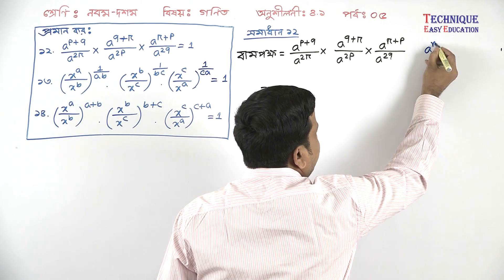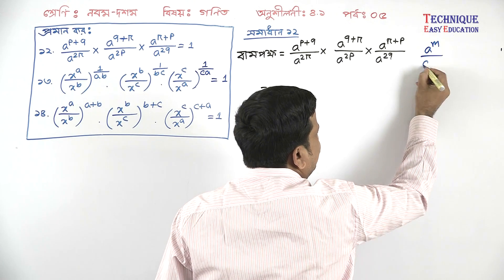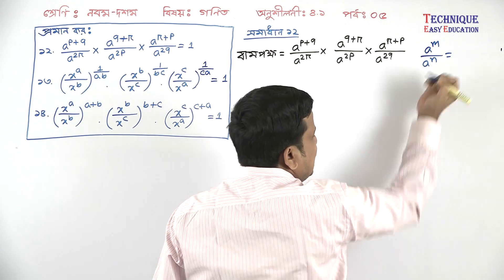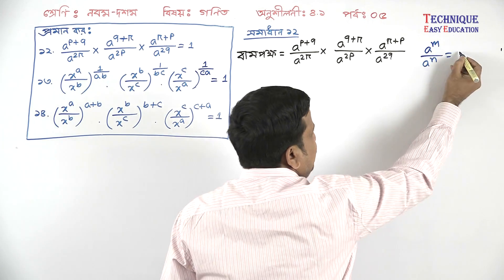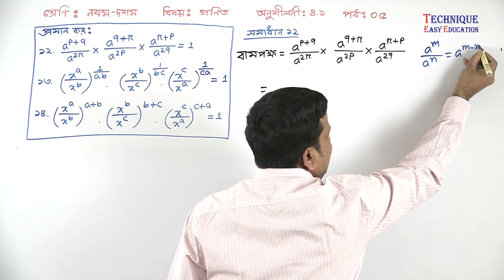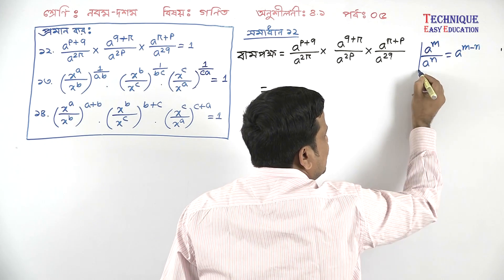Now, that means A to the power M to the power N. So, base X, then power 2, m minus n.